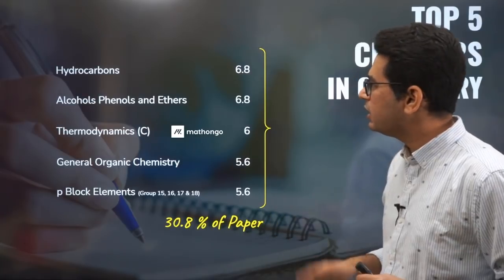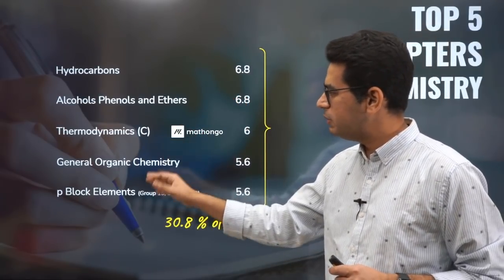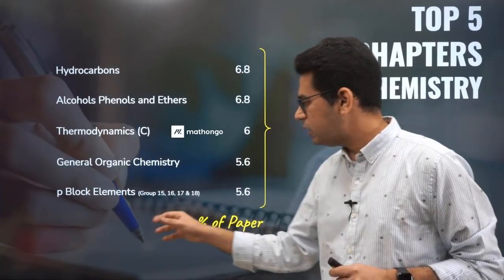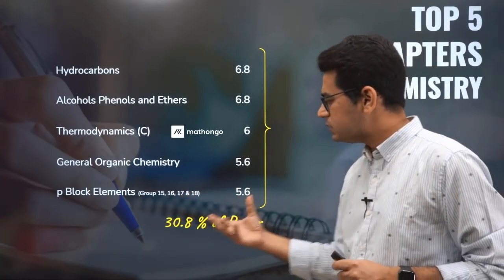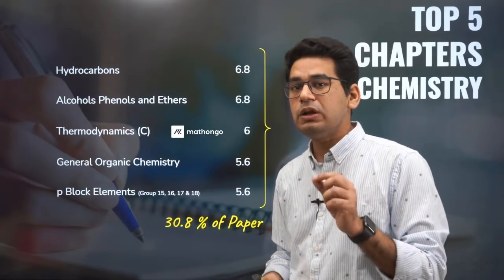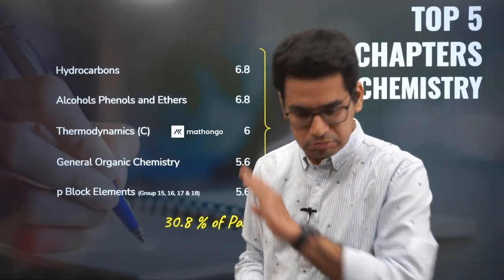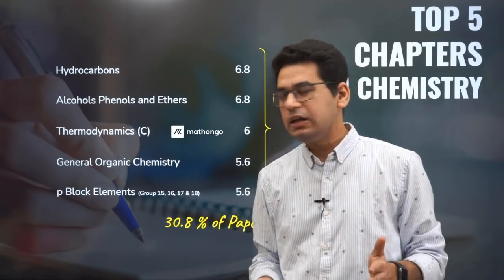Chemistry, if we talk about hydrocarbons, alcohol phenol ether, thermodynamics, general organic chemistry, p-block elements for 12th class groups 15, 16, 17, and 18. These five chapters in totality comprise 30.8% of the examination. Amazing. Study these.